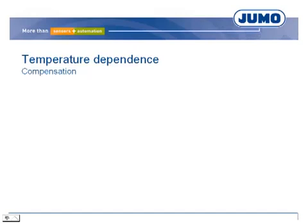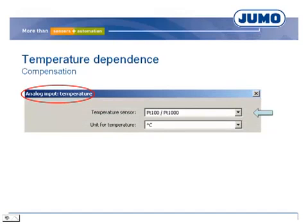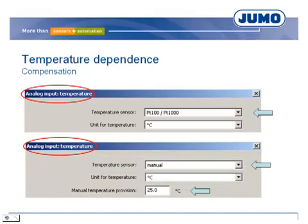The slope of the characteristic depends on the temperature. There are two possibilities for compensation. A resistance thermometer measures the temperature of the medium and the transmitter compensates the deviation. When the temperature of the solution is stable, this temperature can be set on the transmitter.